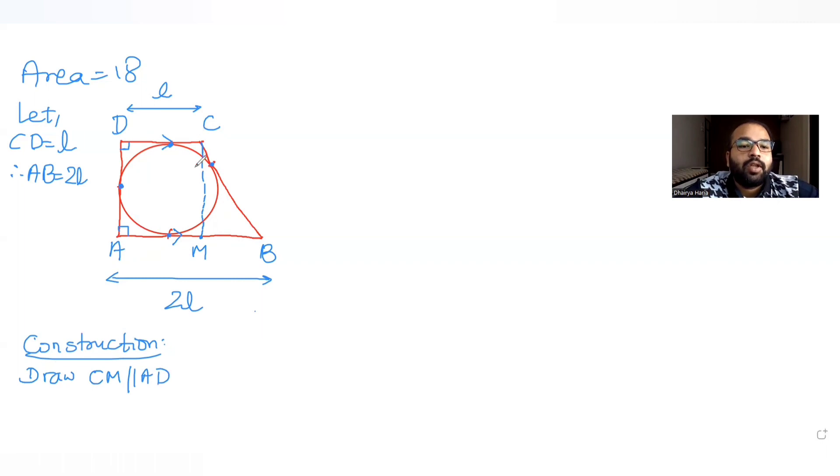Now I know if I'm drawing a line parallel to this, so if this is 90, this is 90, this angle also becomes 90 and 90. So this AMCD becomes a rectangle. So AMCD is a rectangle.